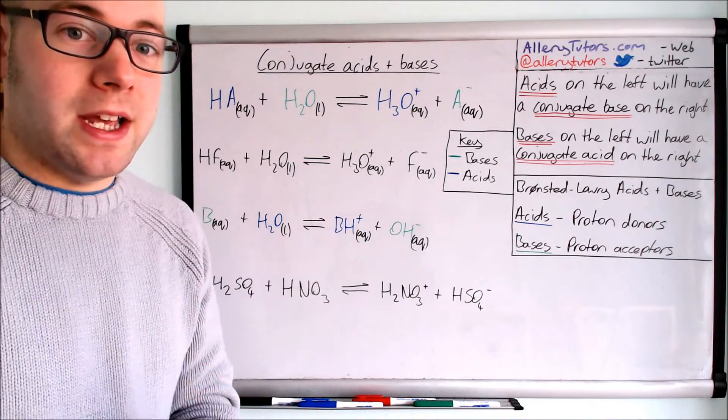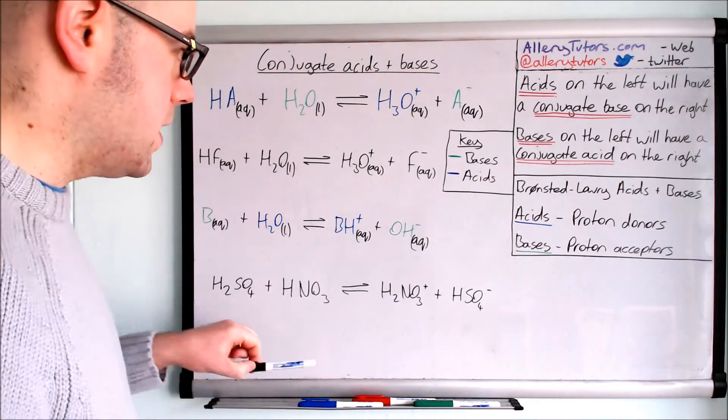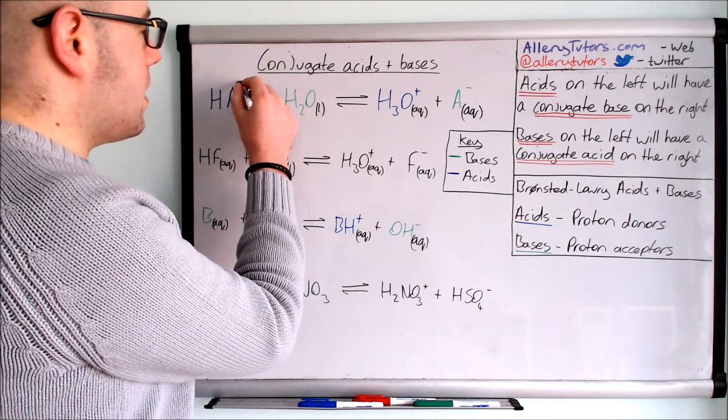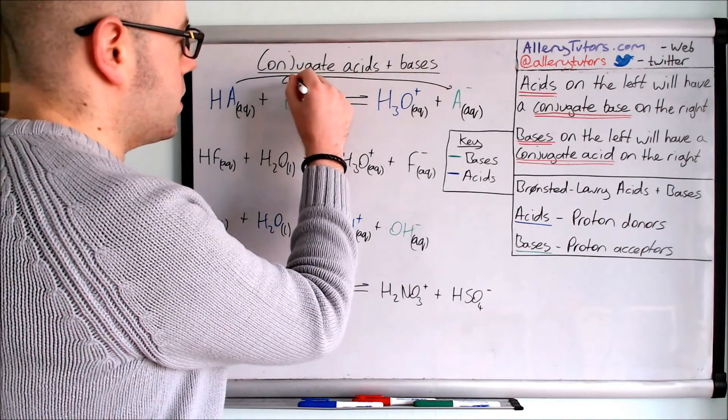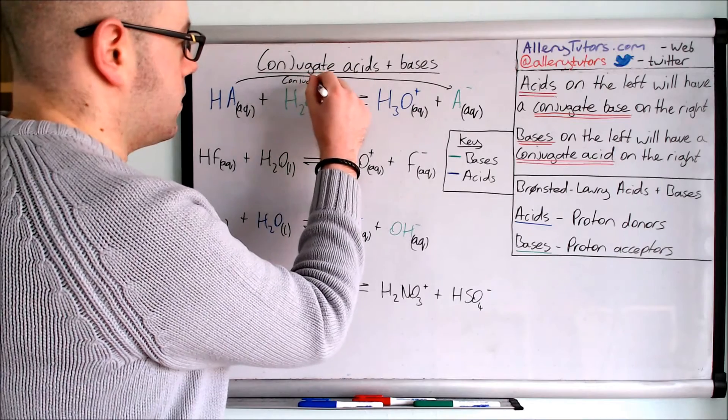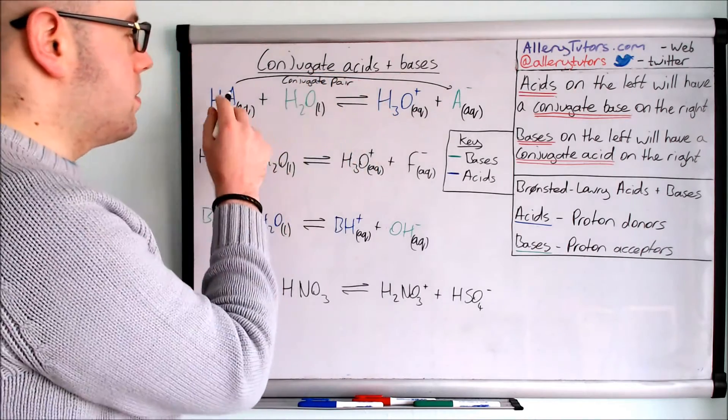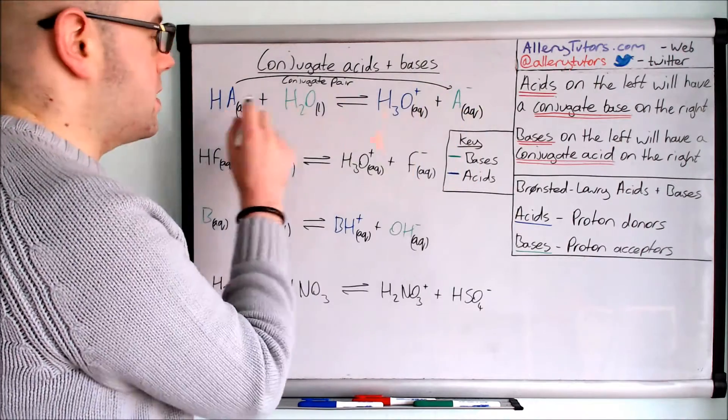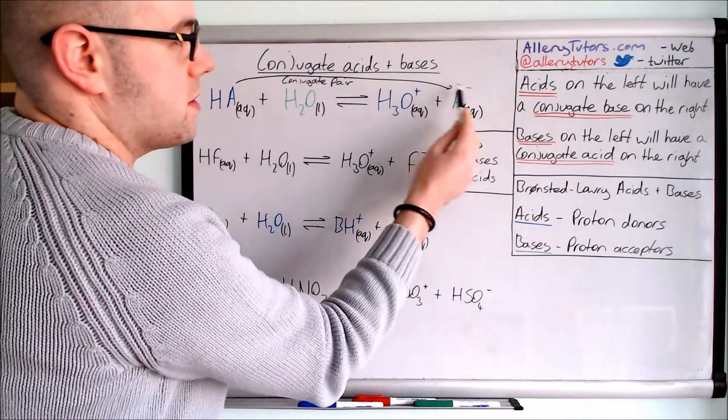So actually the pairings is the acid and the base that's come from the same molecule. So in this case HA and A- these are a conjugate pair. So this HA - and that's the base there - the conjugate acid on the left will have a conjugate base on the right.